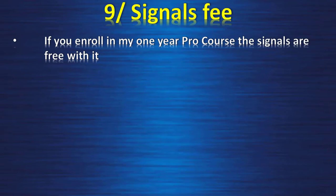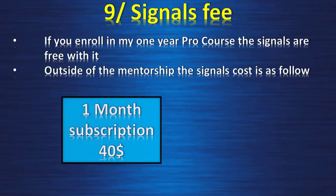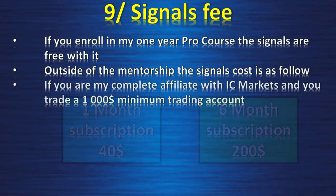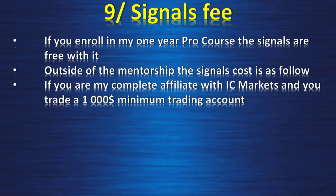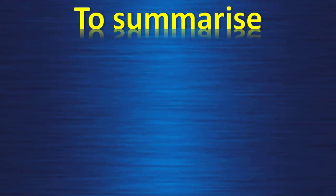Regarding fees: if you enroll in my one-year pro course, the signals are included for free. Outside of the mentorship, a one-month subscription is $40 and a six-month subscription is $200 (one month free). If you are a complete affiliate with IC Markets and trade a $1,000 minimum account, I will give you 50% off all subscriptions.